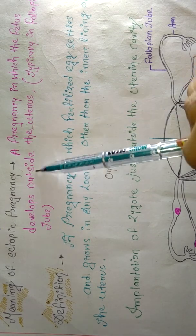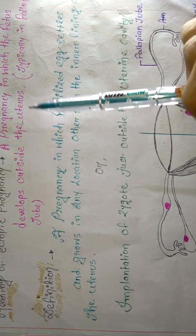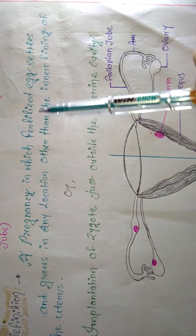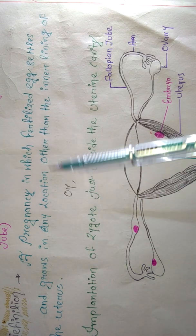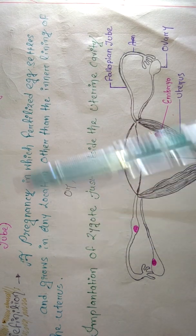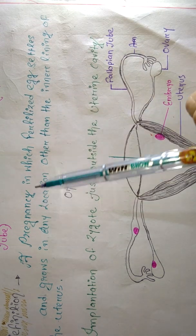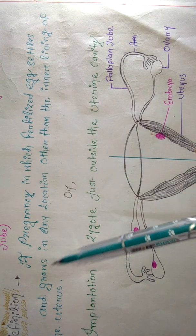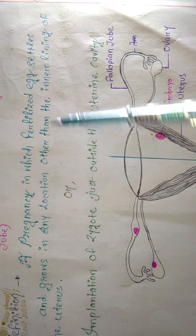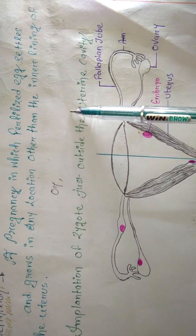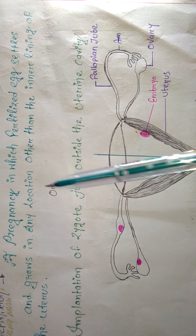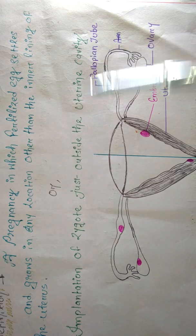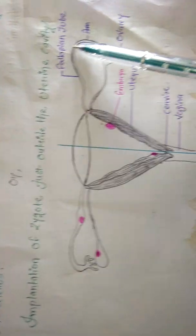The definition of ectopic pregnancy: a pregnancy in which the fertilized egg settles and grows in any location other than the inner lining of the uterus. An alternative definition: implantation of the zygote just outside the uterine cavity.